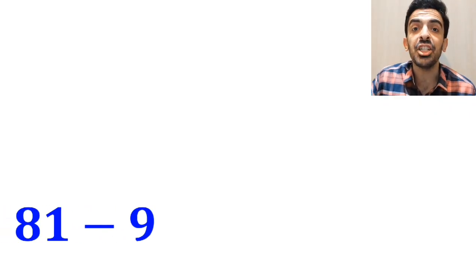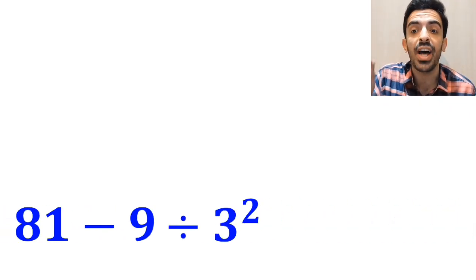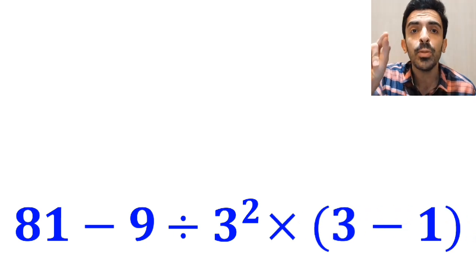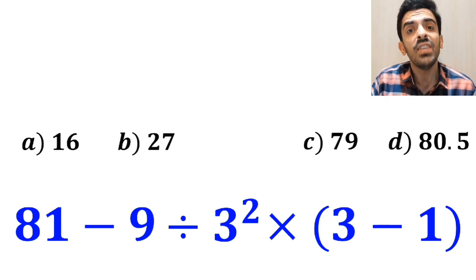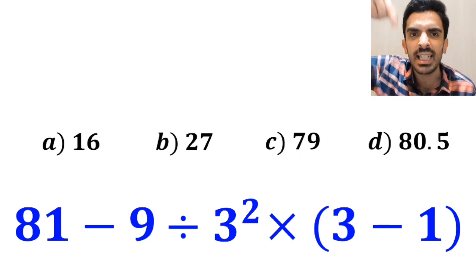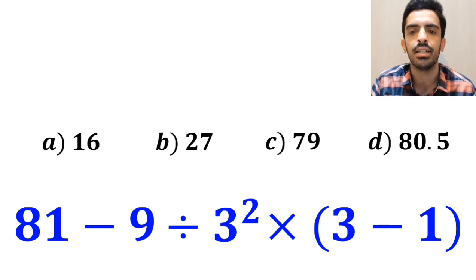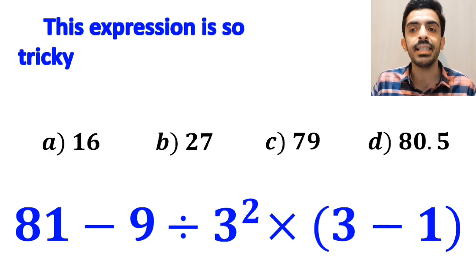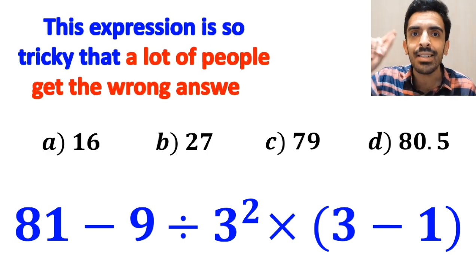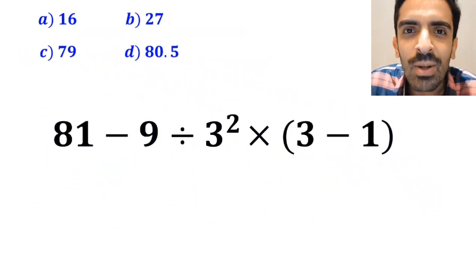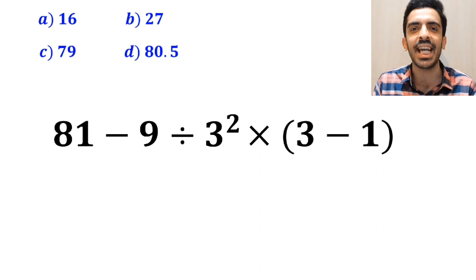What is the value of the expression 81 minus 9 divided by 3 squared multiplied by open parenthesis 3 minus 1 closed parenthesis? Which option do you think is the correct answer to this question? This expression is so tricky that a lot of people get the wrong answer. Let's take a closer look and solve it together.